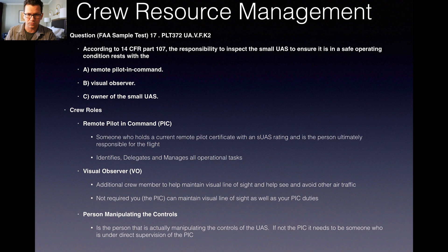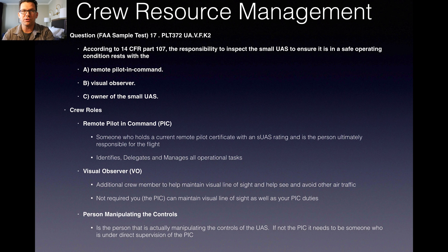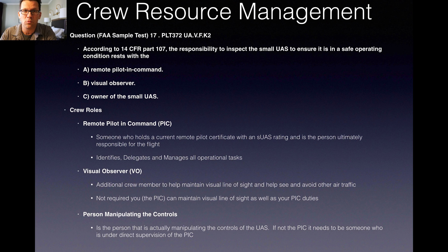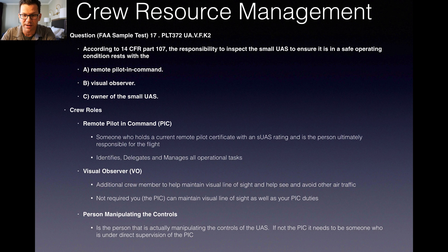Let's start right into crew resource management. This is question number 17 from the FAA sample test. The PLT 372 that you see — if you just search FAA PLT 372 UAG, you'll get a list of the PLTs, which are the learning objectives or learning areas for the test. After you take your test, whatever questions you get wrong, they're gonna list the PLTs associated with those questions. So the question is: according to 14 CFR Part 107, the responsibility to inspect the small UAS to ensure it is in a safe operating condition rests with the remote piloting command, the visual observer, or the owner of the small UAS.